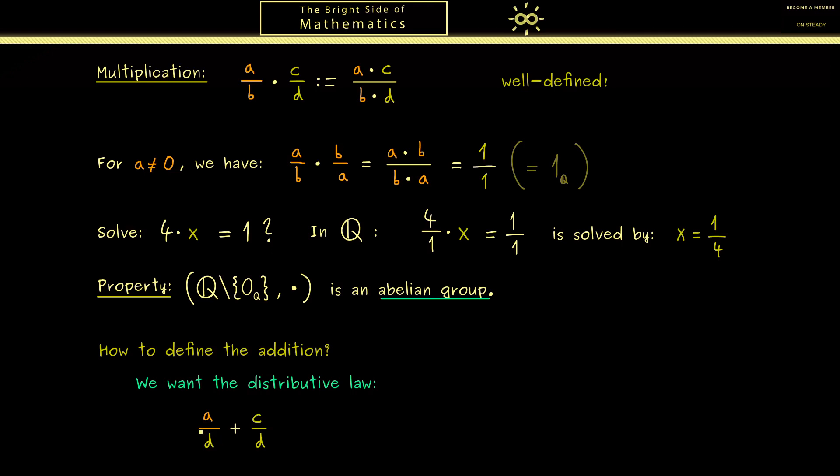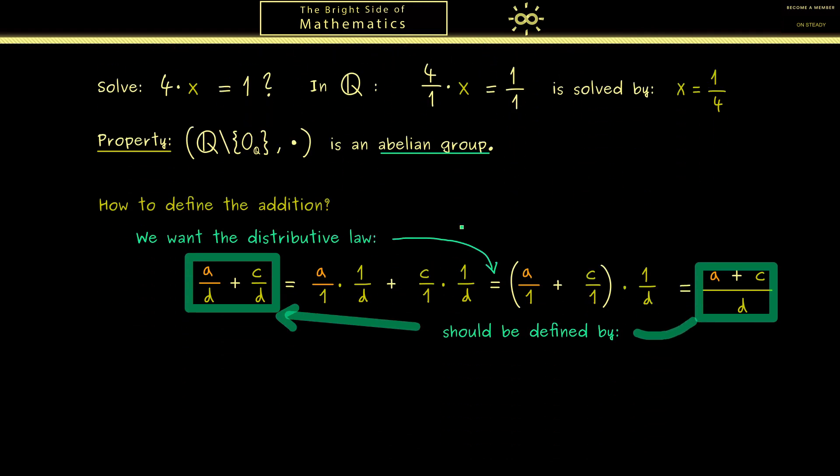Therefore we can check what we need when we want to add two fractions with the same denominator. First by the definition of the multiplication we can rewrite the first part as the product of two fractions, and then of course we can do the same for the second part. And there you see we have the same number here and here, and the distributive law tells us we can factor it out. Now in the parentheses you see the denominator 1, so essentially we just have integers there. And of course the new addition should be compatible with the addition for integers. So we have a plus c in the numerator here. Therefore the only reasonable definition for the addition when we have the same denominator is given by the result here on the right hand side.